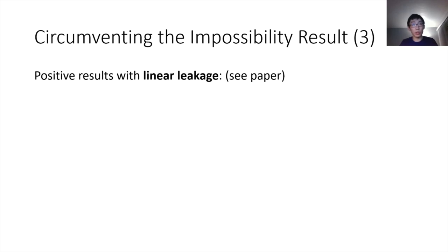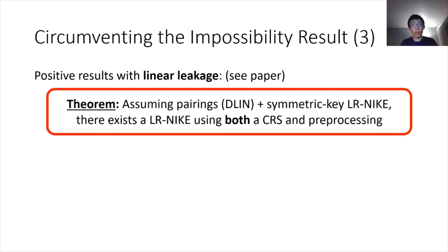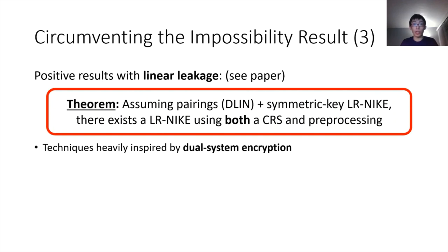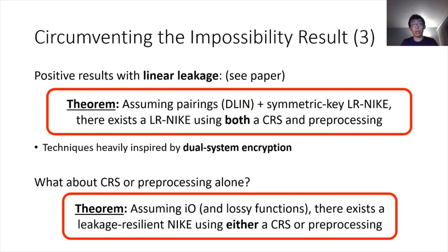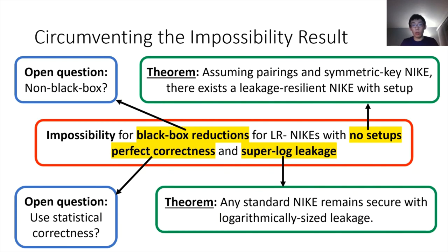We show positive results in that aspect. We first show that assuming pairings and the symmetric key NIKE that we built information-theoretically before, we can build a leakage-resilient NIKE using both setups — a common reference string and the leak-free preprocessing. The techniques we use are heavily inspired by the so-called dual-system framework. A natural question that remains is what if we only want to use one setup at a time, and we show a positive result stating that assuming IO and lossless functions, one can have a leakage-resilient NIKE using either one of those two setups. Our black-box impossibility results only dealt with schemes in the plain model, and it turns out that if we allow setup, we can actually get positive results.